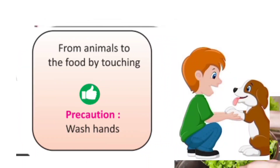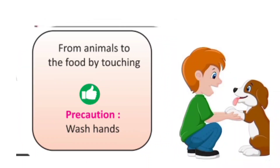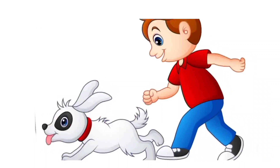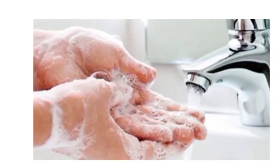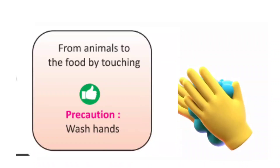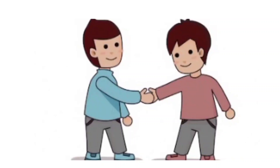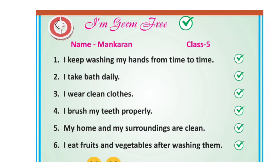Number five: germs spread from animals to food by touching. Precaution: wash hands thoroughly. Mankind has got a certificate from the school that they are germ-free — everything was marked right, so Mankaran got this certificate.